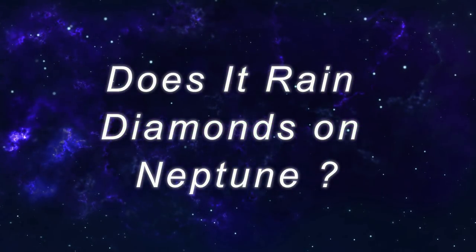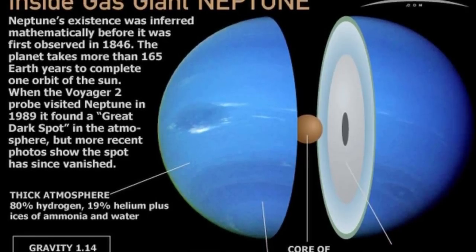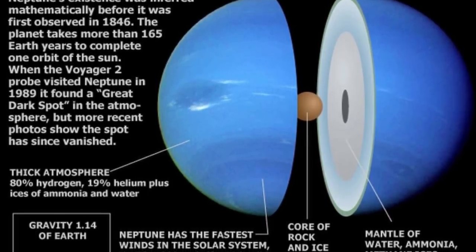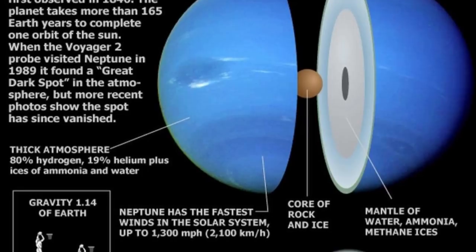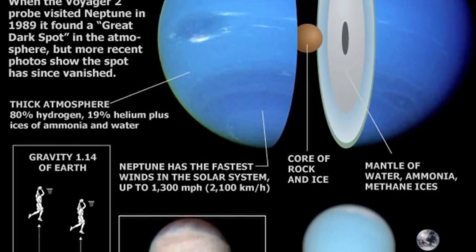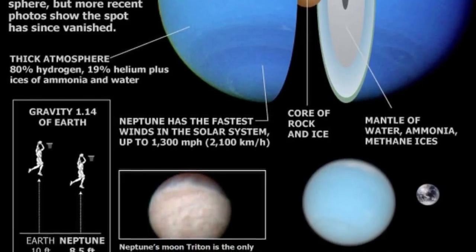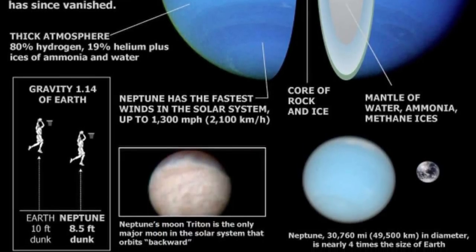Does it rain diamonds on Neptune? Neptune is the 8th and farthest planet from the sun in the solar system. Neptune's atmosphere, like Jupiter's and Saturn's, is composed primarily of hydrogen and helium, along with traces of hydrocarbons and possibly nitrogen. However, it contains a higher proportion of ices such as water, ammonia, and methane.